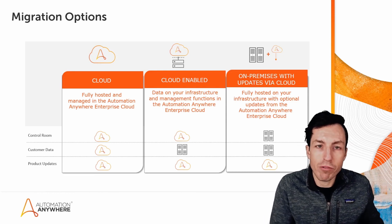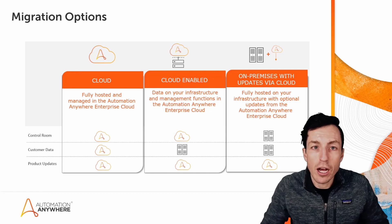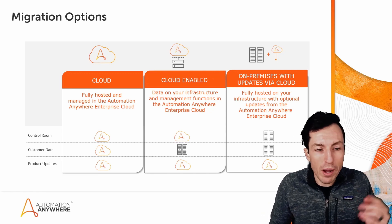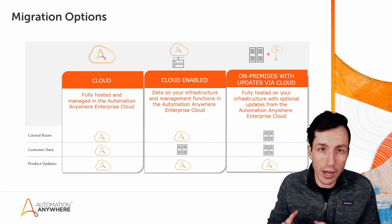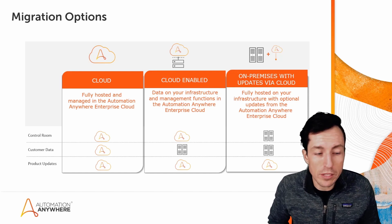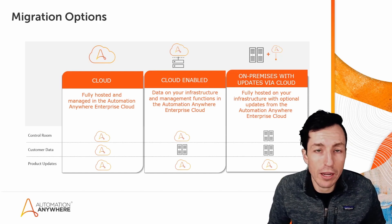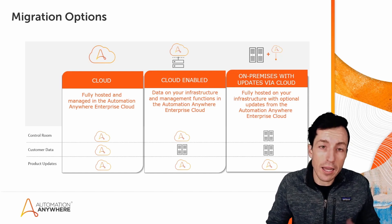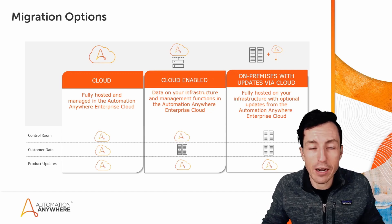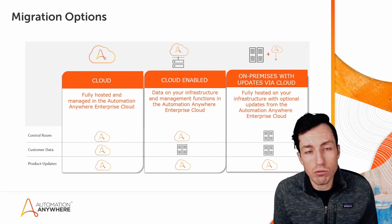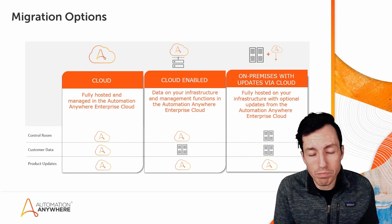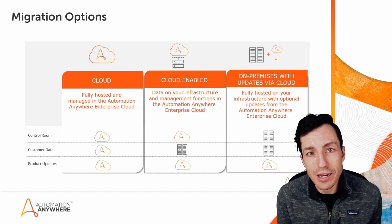So first off, let's take a look at your migration options. If you're coming from version 10 or version 11, assuming compatibility with your specific version, you do have the ability to migrate to either a pure cloud solution where your control room data and product updates are all handled directly in cloud — your data is stored securely in cloud and all of this would run directly in cloud and be managed by Automation Anywhere.